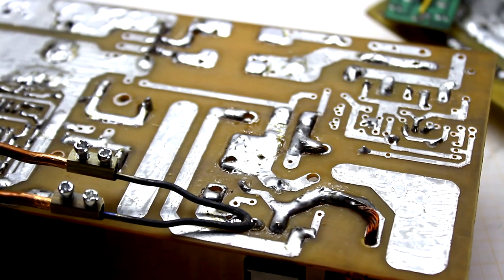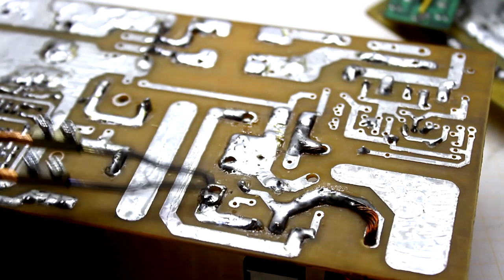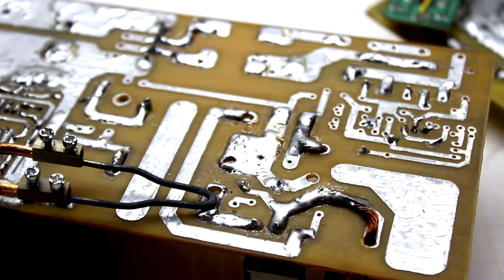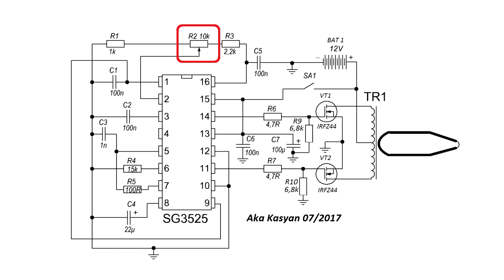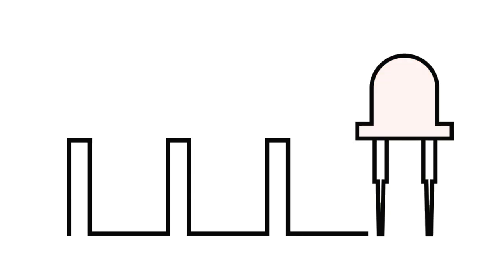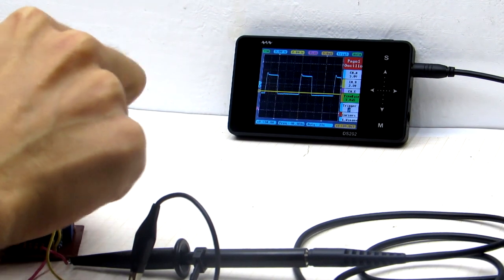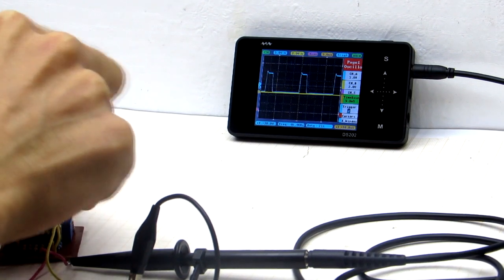The converter is quite powerful. If you don't control the power, the tip will literally melt. That's why I inserted in the circuit a variable resistor of 10 kOhm, which will allow manually changing the duty cycle of the pulses and will allow regulating the power of the soldering iron as a whole.